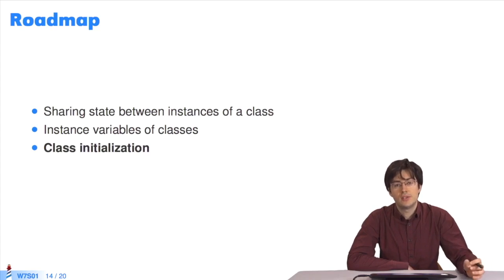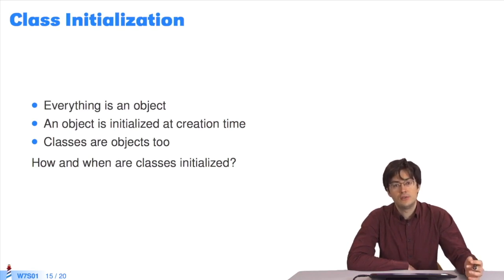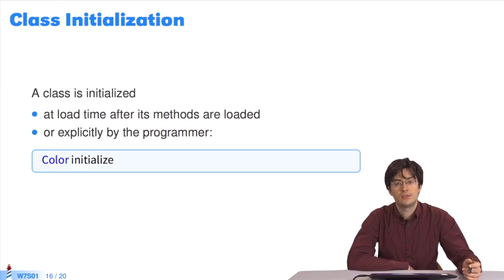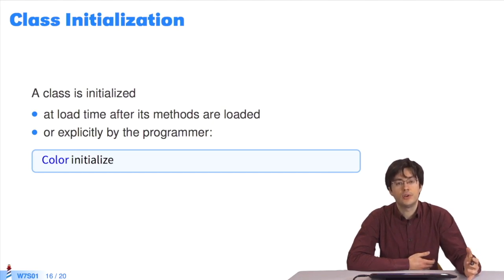Now for class initialization. We can have variables shared between a class and its instances, but at some point we must give them a value. We do this when we initialize the class. Objects are initialized when the initialize message is sent. Likewise, we can send the initialize message to a class. We decide how to initialize variables using the initialize method code. If we want to initialize the color class, we send the initialize message to it. Typically, when a class is loaded in the system by the version control tool, the initialize message is sent to all classes automatically. There's no need to send the message manually to all classes loaded. But if we create a new class using the initialize method, we must send the message manually.